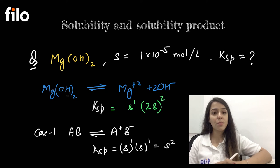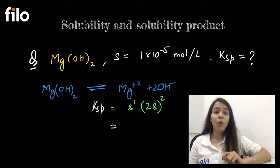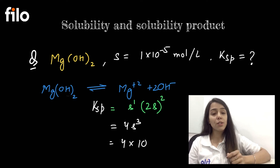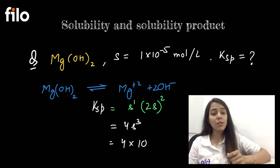Now let's get back to the question that we were doing. We have to calculate the final value. It will be 4S³. Now we will put the value of S and we will get our answer as 4 × 10⁻⁵ times 3, that will be minus 15. So this will be the final Ksp of this salt.